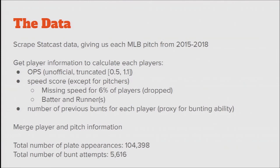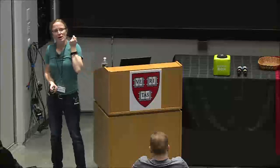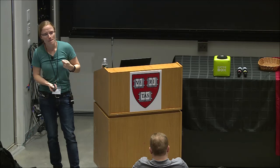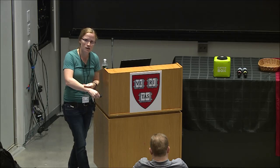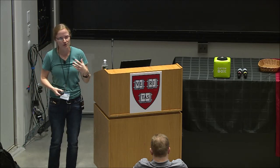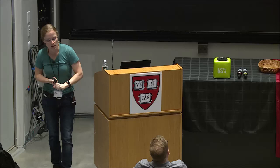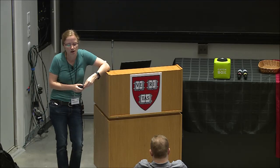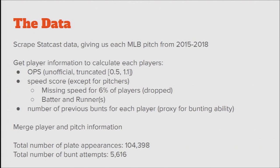We looked at the number of previous bunts as our proxy for bunting ability, since there really isn't a statistic for how good somebody is at bunting. A friend on a team said if you asked the players how good they are at bunting, they'd all say they're great — so you can't use that. We merged pitch and player information and got about 100,000 plate appearances and about 5,600 bunts, which is about 5% — pretty small, but intuitively makes sense.